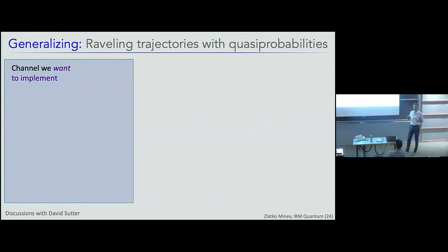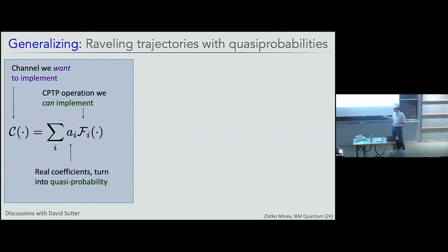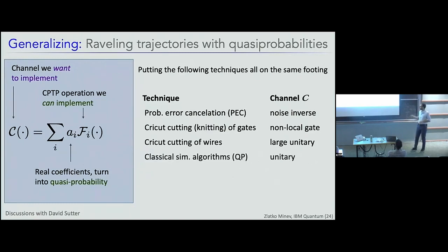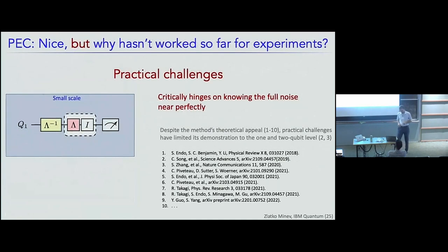So this is all very nice. And if we zoom out for just a second from the very simple pictures here, you can also generalize this to pretty much any general quantum channel you want to implement in terms of operations that are implementable, that you can actually do, whether that's on one chip, two chips that are connected, they have LOCC or not. So you can take any quantum channel, decompose it into operations you can do in terms of real coefficients, and you can turn those into quasi-probabilities. And this is at least the way I'm starting to think of many of these techniques on the same footing, whether it's probabilistic error cancellation where you try to do a noise inverse or it's circuit cutting or circuit knitting in terms of gates where you want to implement a non-local gate across disconnected physical processors or you're cutting wires or you're perhaps doing a variety of classical simulation algorithms and you're trying to implement the unitary.